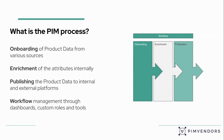Then you publish those products to both internal and external platforms. So those could be your internal channels such as your e-commerce store, an app, a printed catalog, or it could be external platforms like Amazon, your supplier, your customer portals, et cetera. And then on top of that sits the workflow management, which is a set of tools and dashboards designed to help you manage the process of onboarding, enrichment, and publication as smoothly as possible. It could be dashboards with triggers to warn you of bottlenecks, but it's also helpful to have custom roles that have different rights so that your copywriter or translator is not able to delete the images from the product.